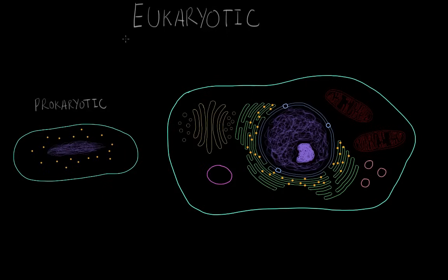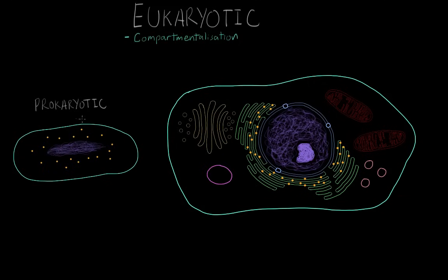The most important thing that eukaryotic cells possess that prokaryotes don't is the idea of compartmentalization. This is kind of a big word, but essentially what it means is that the cell is divided into different compartments. We can see some of these compartments drawn here on the right in our eukaryotic cell, whereas our prokaryotic cell does not appear to have many different compartments. But why is it that a eukaryotic cell has lots of different compartments within it?